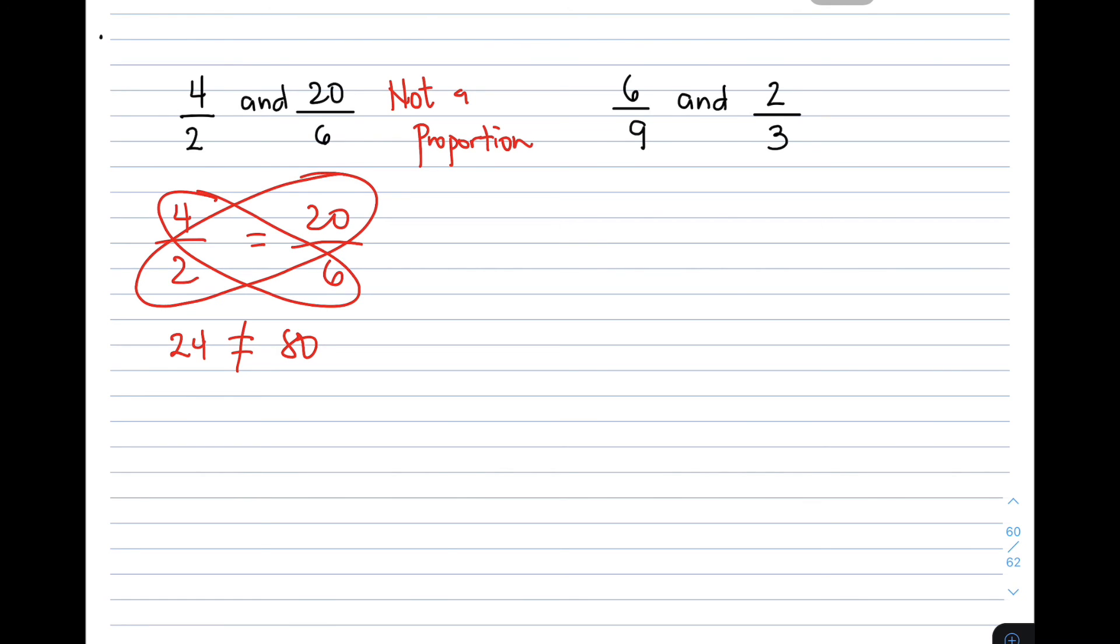So let's move on with the last example. We have 6 over 9 is equal to 2 over 3. So let's try, let's multiply. 6 times 3, it will give you 18. And 9 times 2, it will also give you 18. So they are equal, meaning this is a proportion. So that's how simple the way is to know whether the given ratios can form a proportion or not.